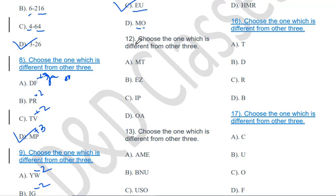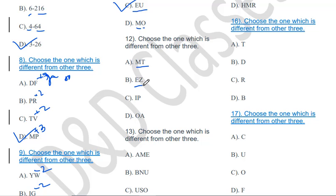Choose the one which is different from the other three: MT, EZ, IP, OA. Using the vowel logic: EZ starts with a vowel, IP starts with a vowel, OA starts with a vowel. But MT starts with a consonant and has no vowel first. So MT will be the odd one out.